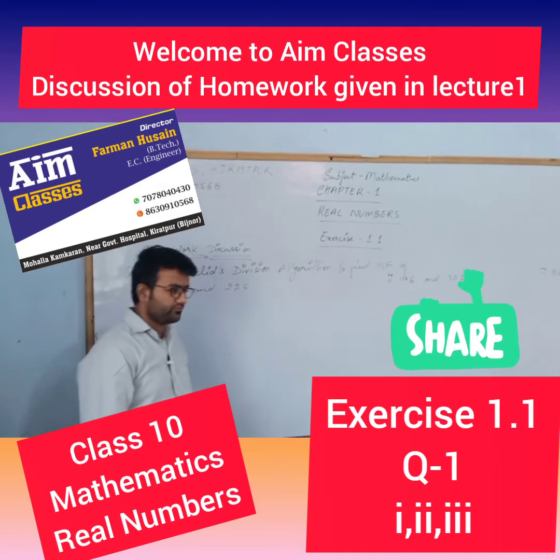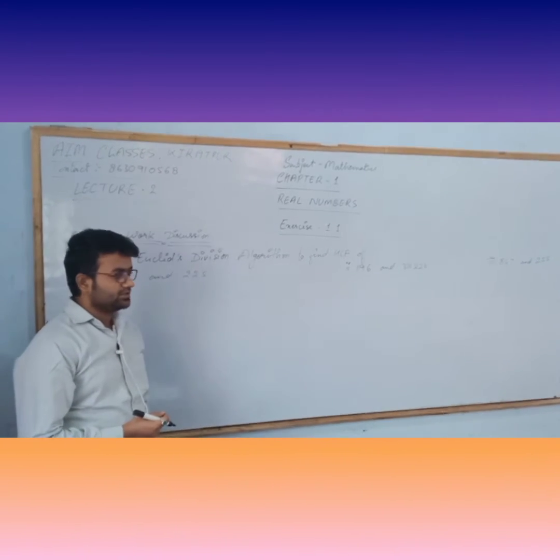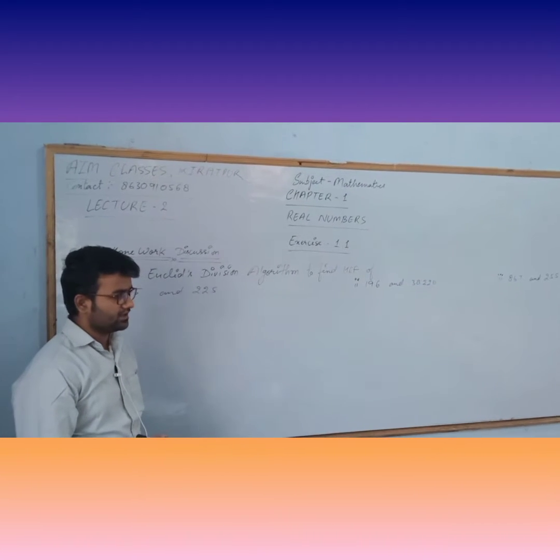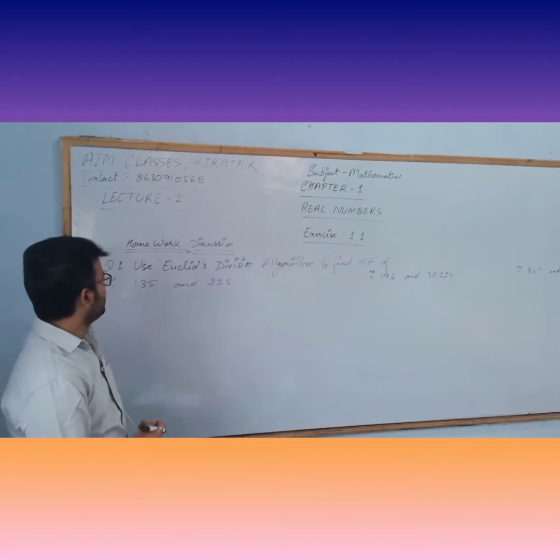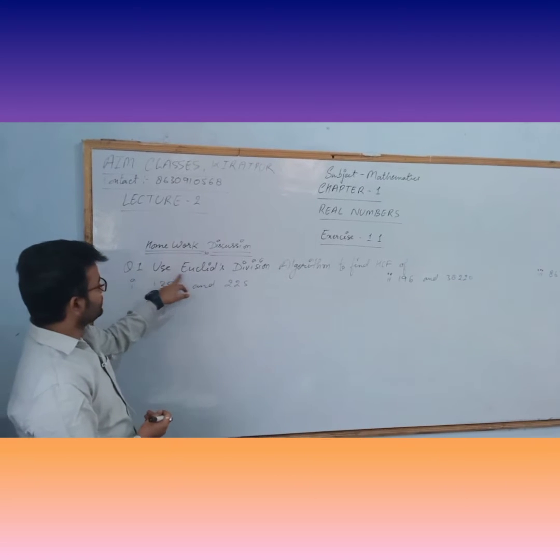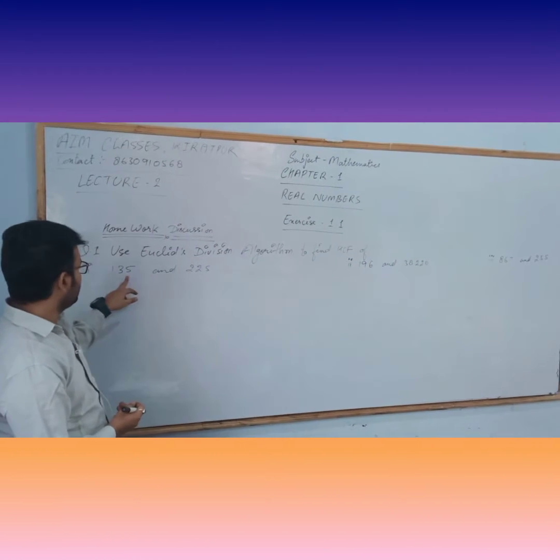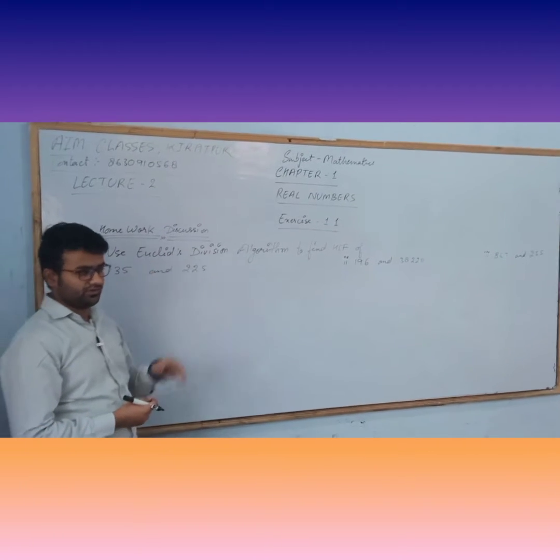Last one everyone, today we will discuss the homework which we have given in our last lecture. Your homework is, use Euclid's division algorithm to find HCF of numbers 135 and 225.